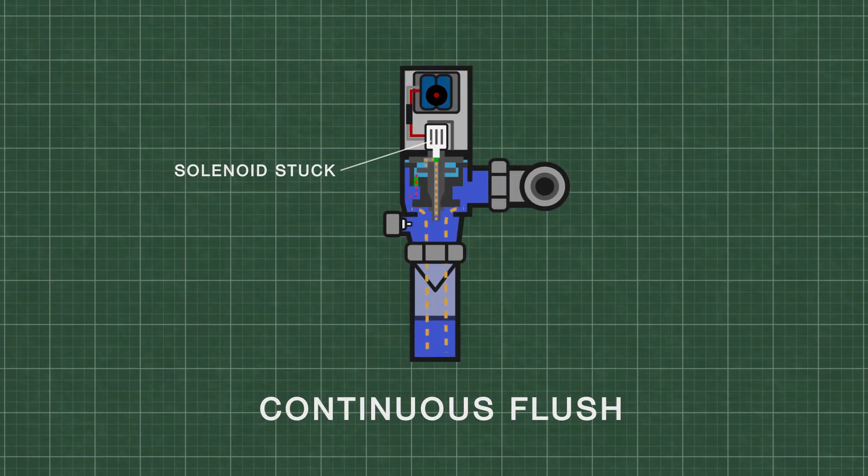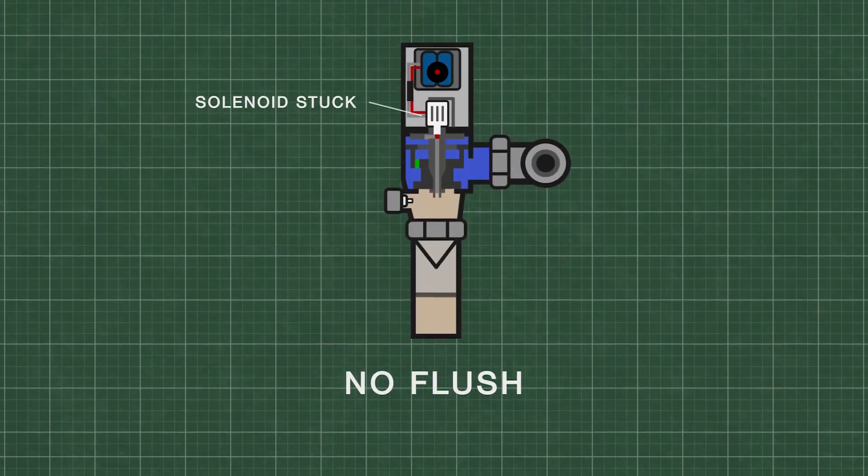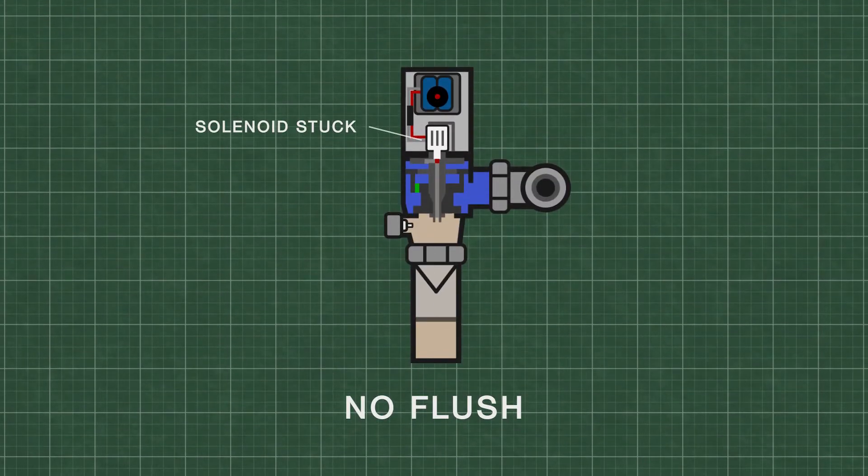If the solenoid is stuck open, it can cause continuous flushing as water continues to flow out and prevents the upper chamber from filling with water. If the solenoid fails to open, it can prevent the unit from functioning at all.